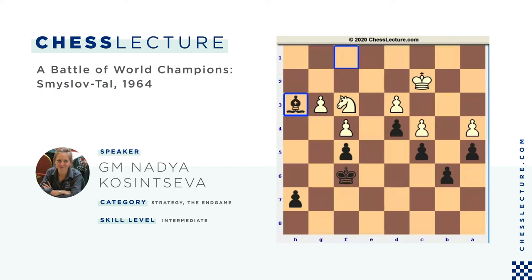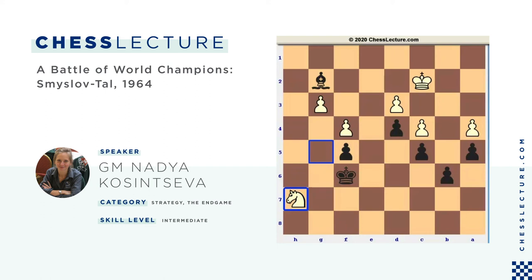So black just took the pawn on h3: Bxh3, Ng5, Bg2, Nh7, Kg7, Ng5, Kg6. Still hard to believe that black can win this endgame. White still has two weaknesses — a4 and d3 pawns — but the white king is able to protect them: Bc6, Kb3. The black king will play the decisive role — the black's main power in this position is his king. Kh5, Kg4 — something that white cannot stop.